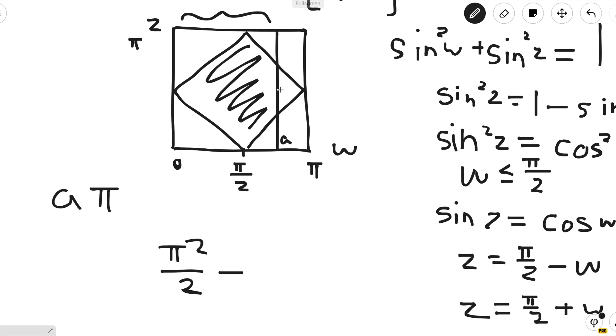And the area to the right, that is a 45-45-90 triangle with a height of π - a. And just by doing a little bit of geometry, we can verify that this is (π - a)².